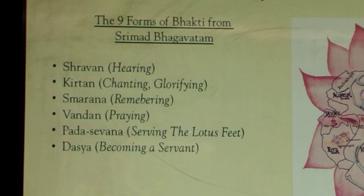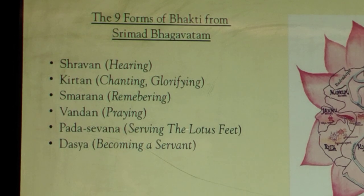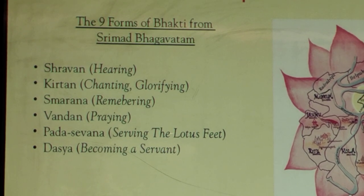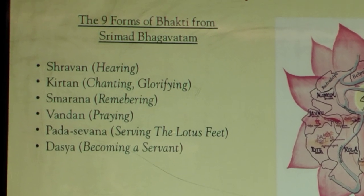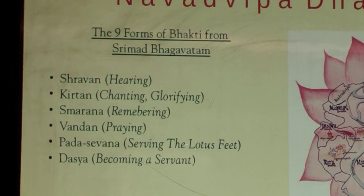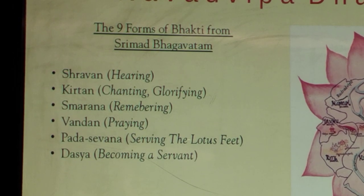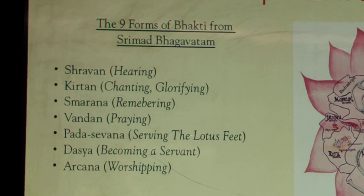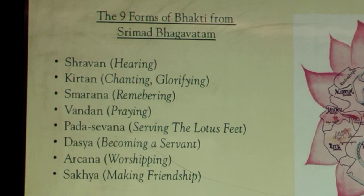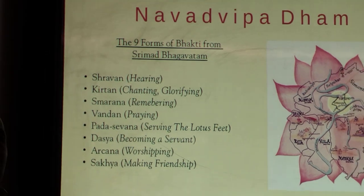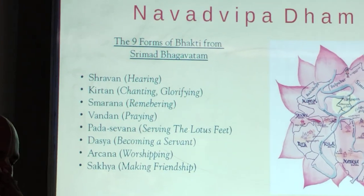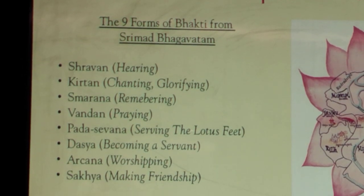Then Dasya — becoming a servant of the Lord, actually meaning a slave of the Lord. A servant is paid and can say he doesn't want to do something, but a slave of the Lord does without question whatever the Lord wants, even if it is a big inconvenience. One has to reach that platform. Then Archanam — puja, worship of the deity. Then Sakhyam — making friendship with the Lord. If you have a friend, you tell them everything. When something happens, first you inform them. You make friendship with the Lord and reveal everything. And then Atma Nivedana — these are nine forms of bhakti.